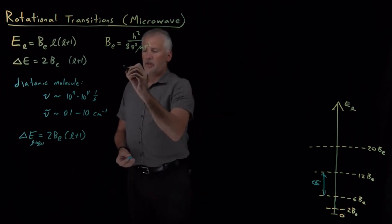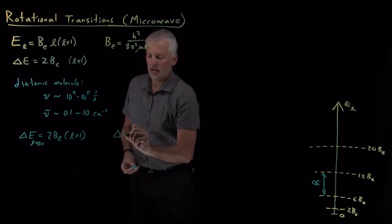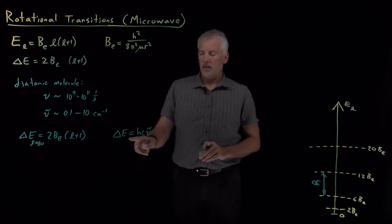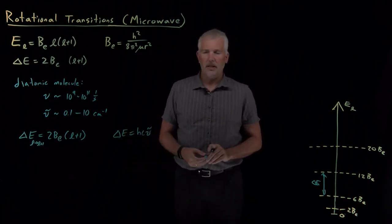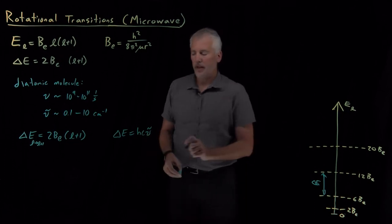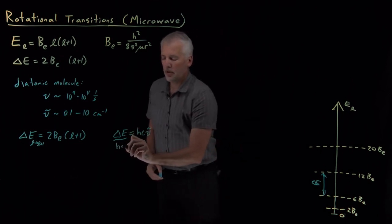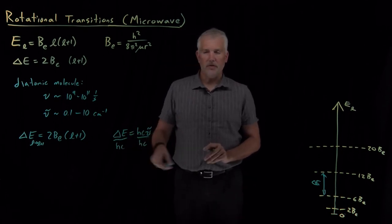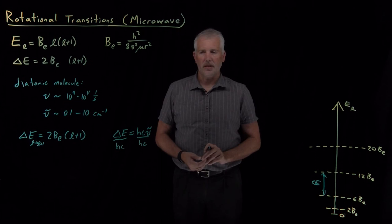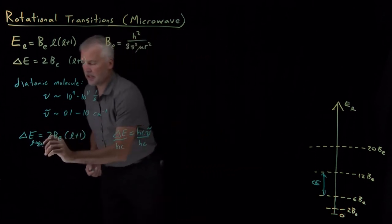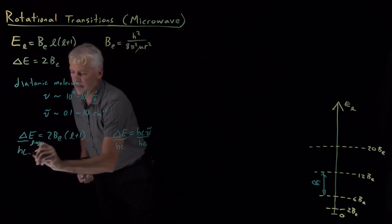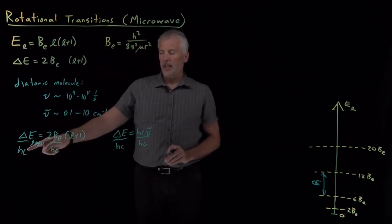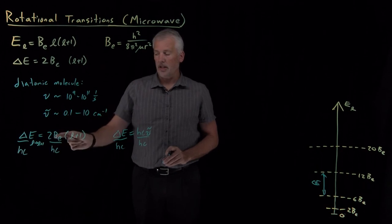I know that an energy is related to the wave number as delta E equals HC times the wave number. So if I just divide through by HC, wave number is equal to an energy difference divided by those two constants, Planck's constant and the speed of light. So on this expression, if I divide by HC on both sides, then now that equation, instead of being in units of energy on the left and energy on the right.